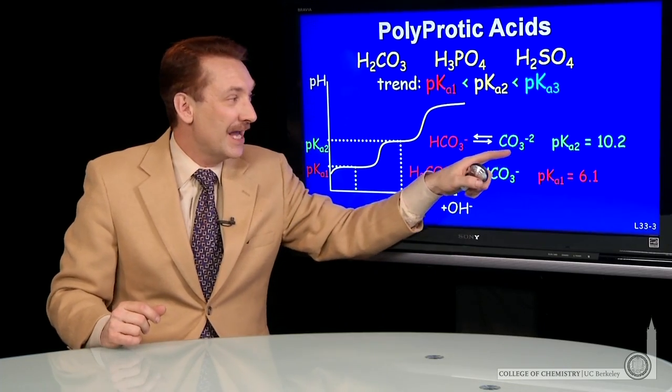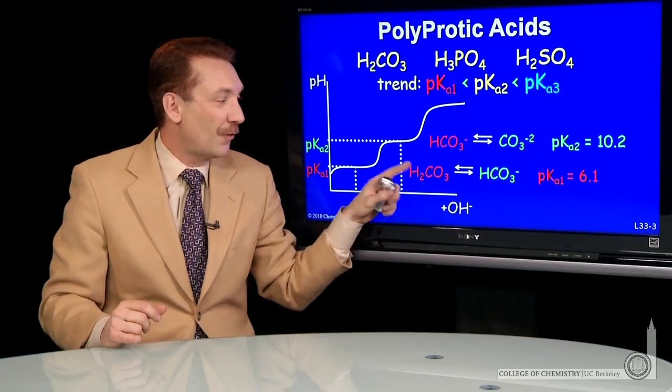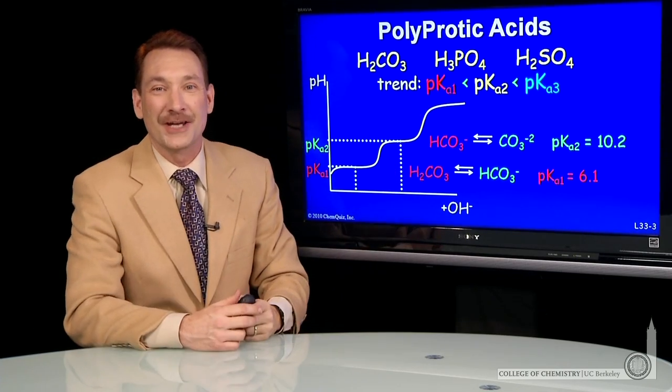So by looking at the pH and the various pKa's, you can predict which forms are present in solution. That's the titration curve for a polyprotic acid.